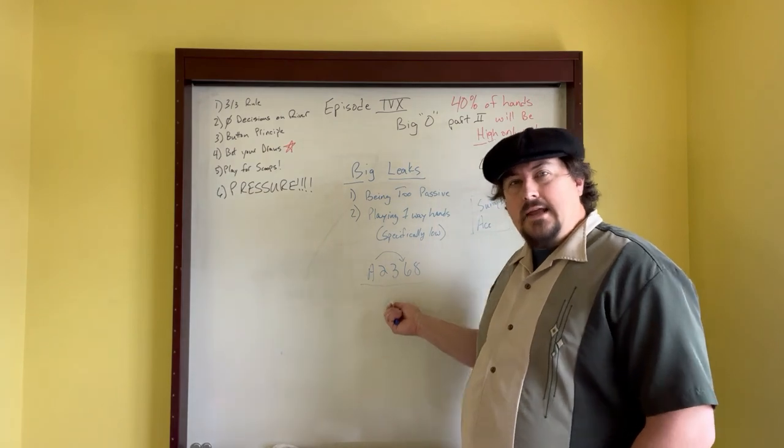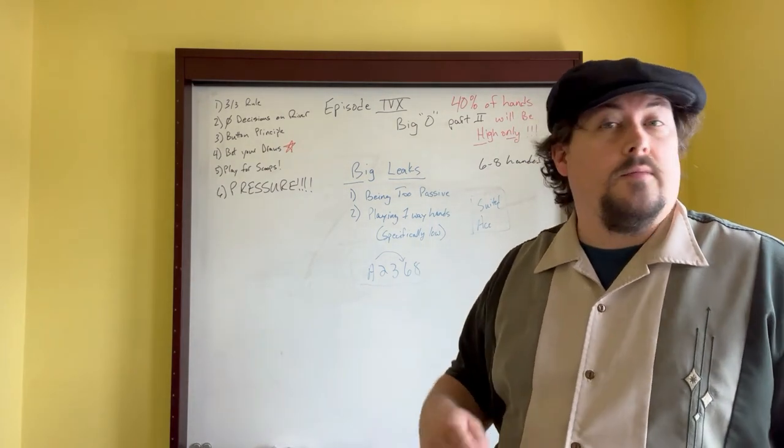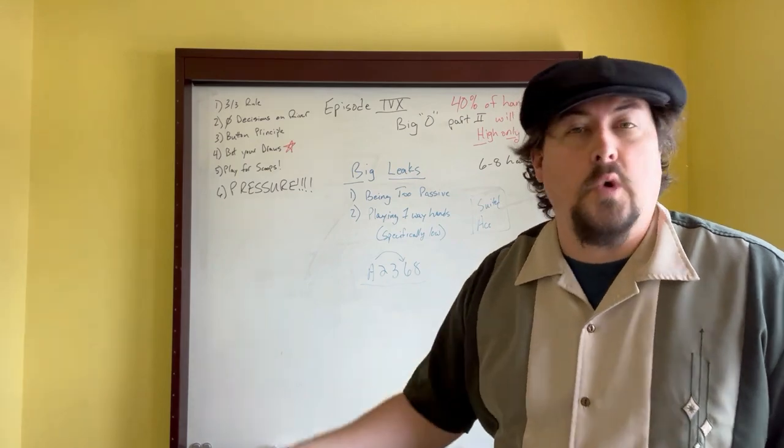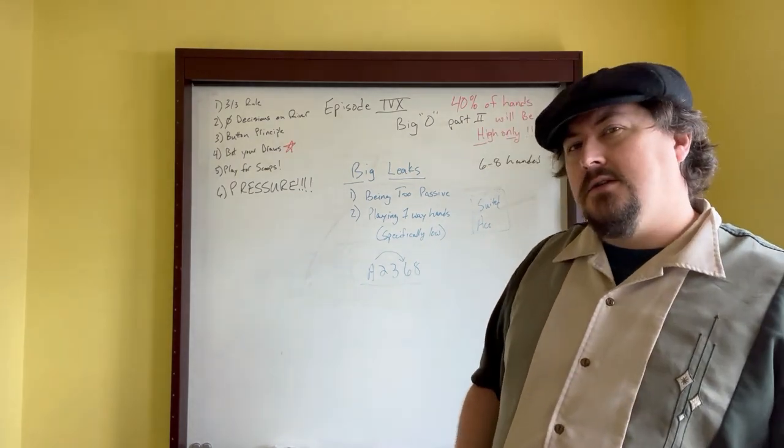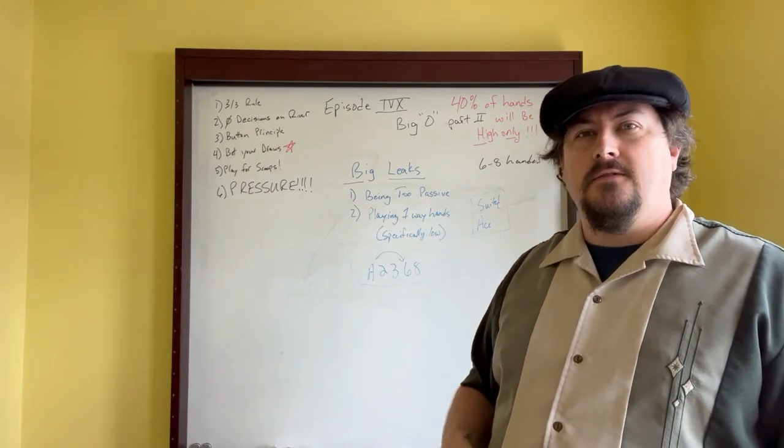But generally speaking, ace deuce three six eight is not a hand I would prefer. I would prefer ace four five queen king, or ace four five ten queen. In some situations I'd even prefer ace four five jack jack. I don't like nine nine in Big O, obviously, because it's like the sliver of where you have the high margin.